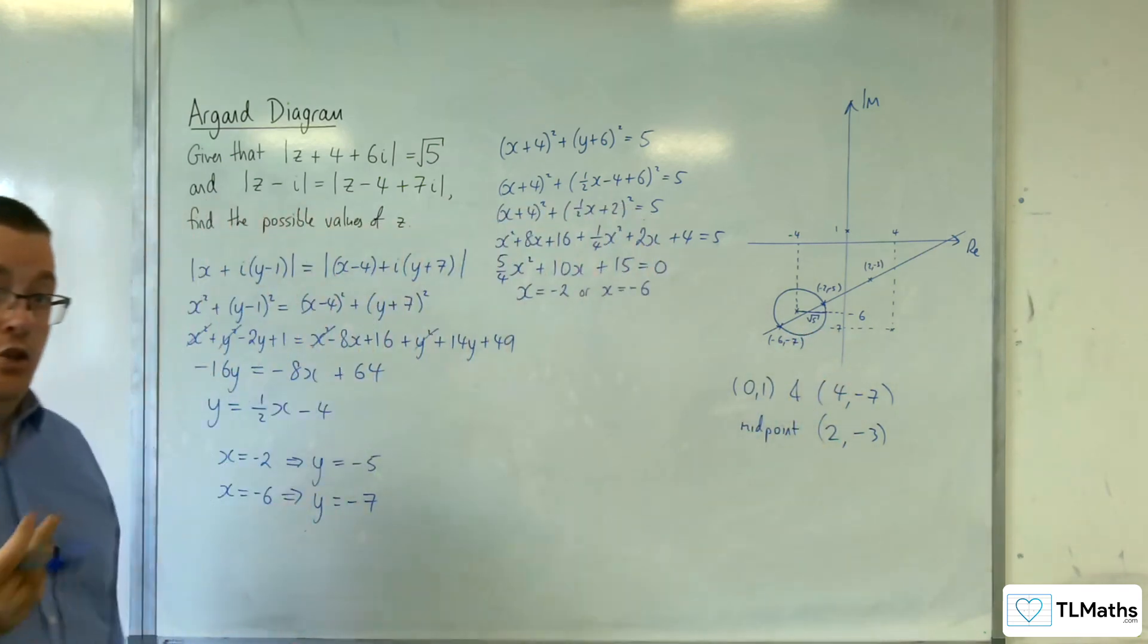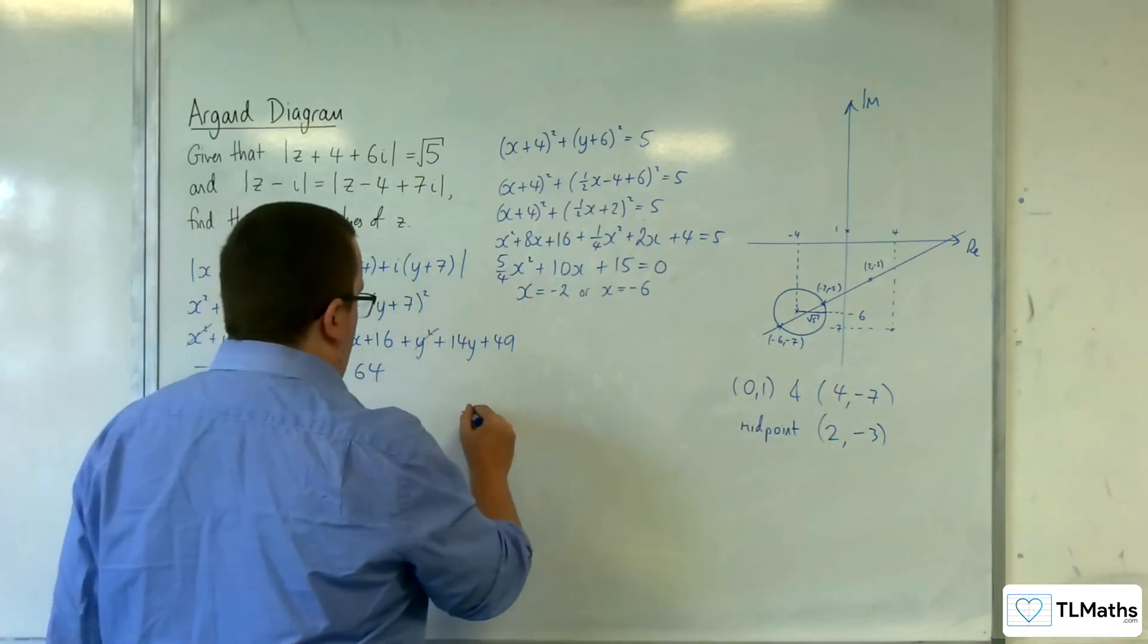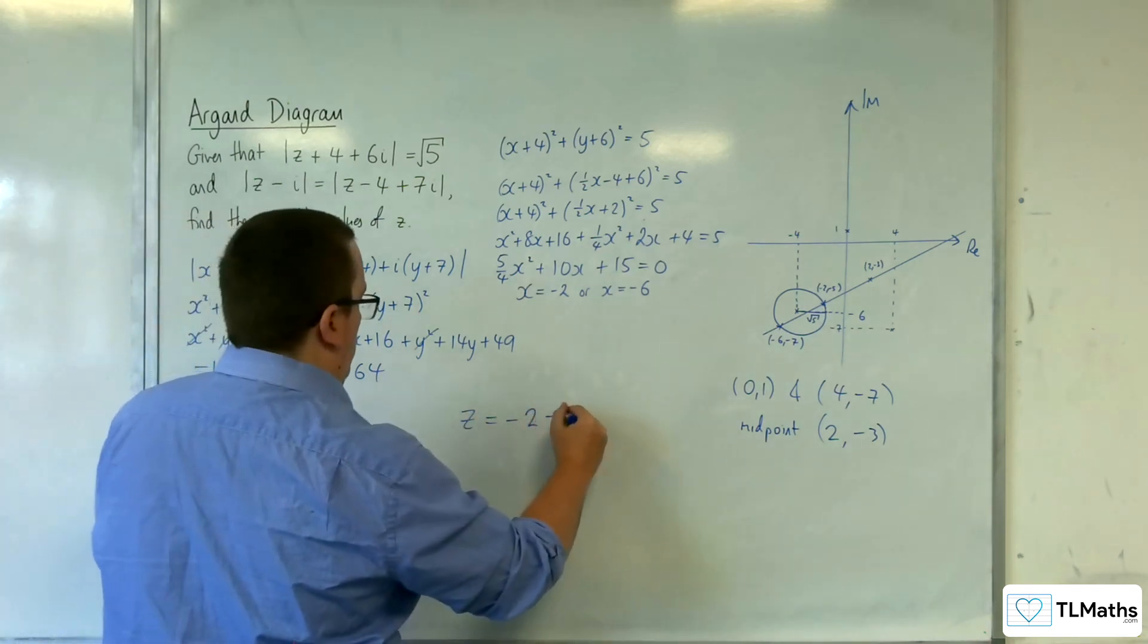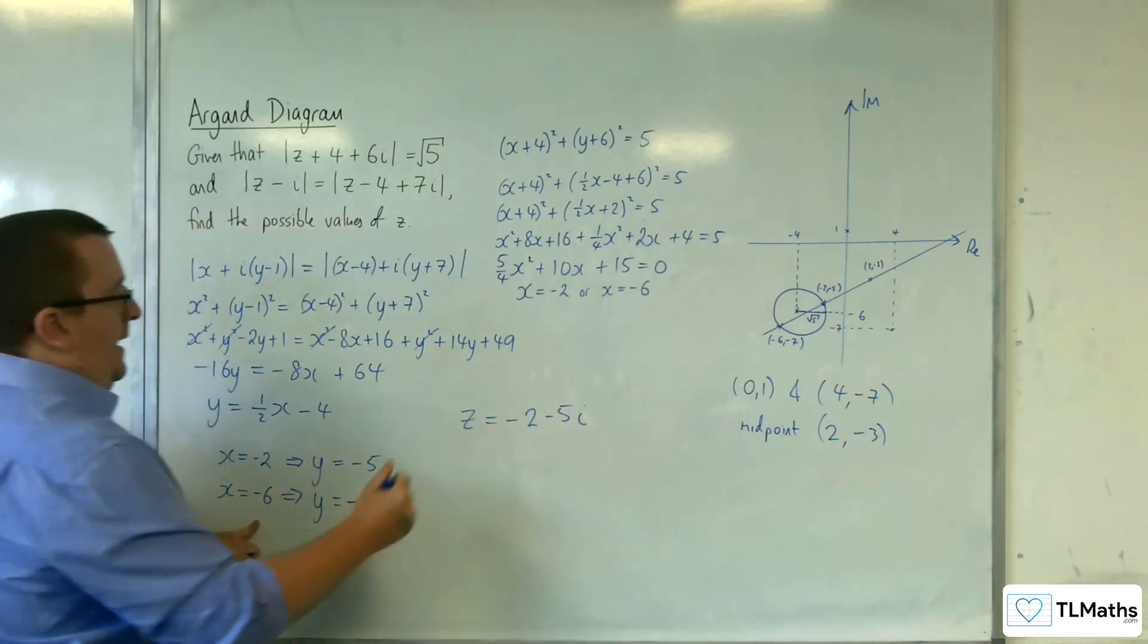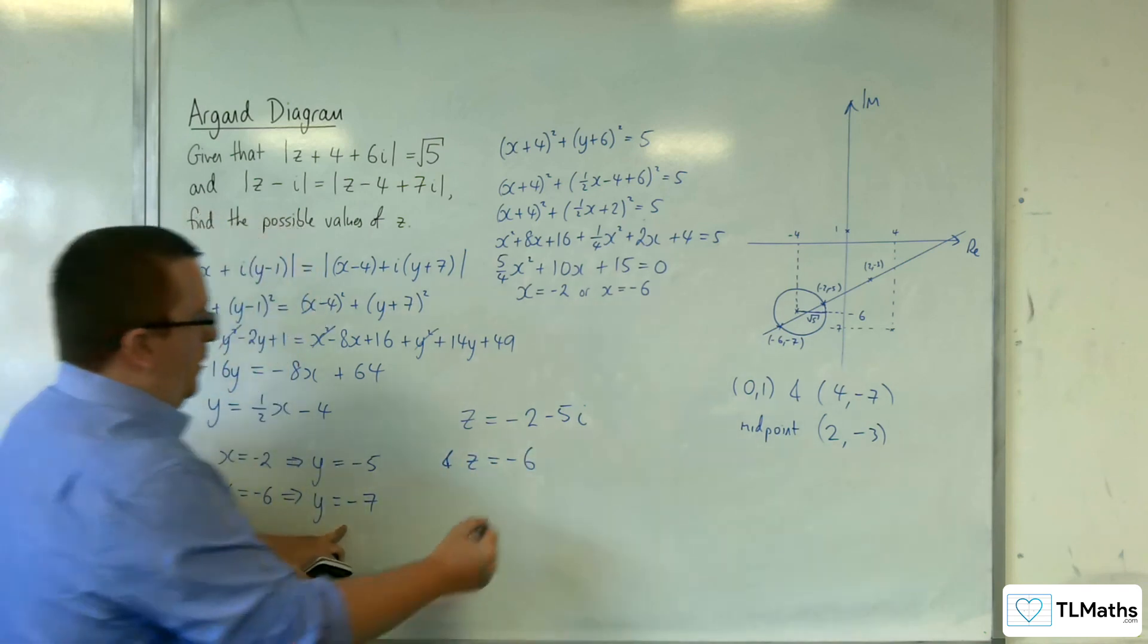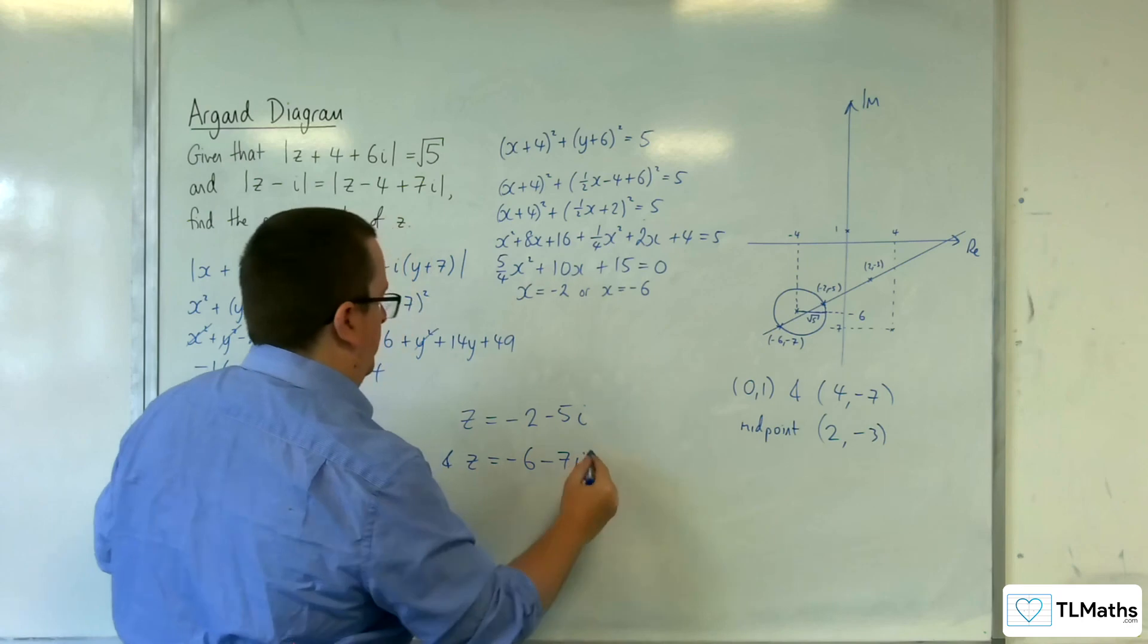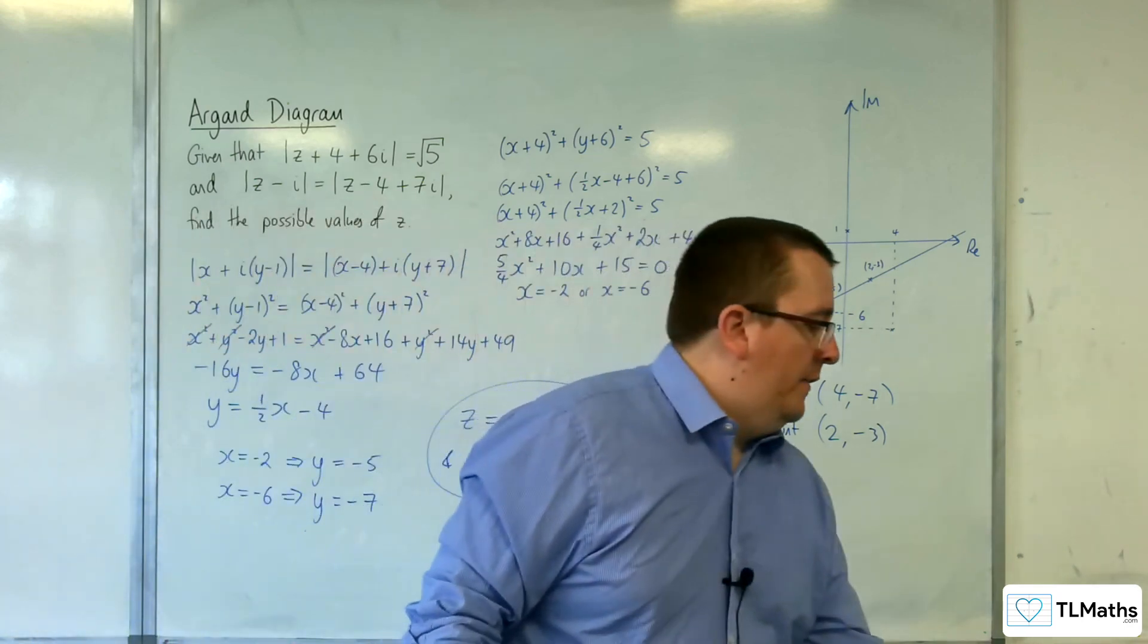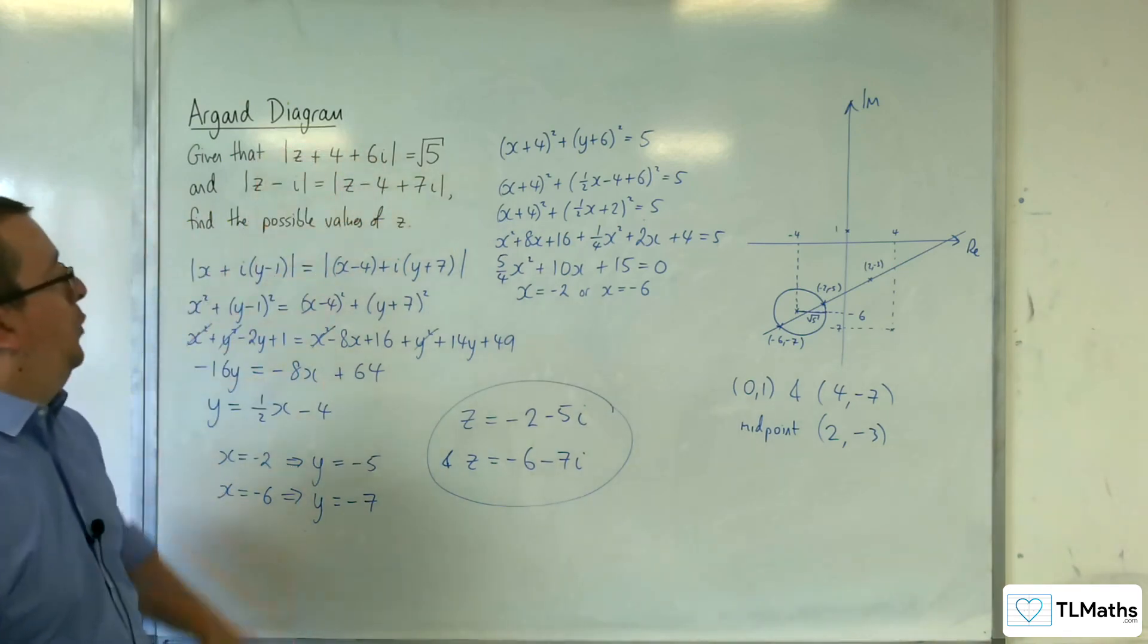So the actual complex numbers that satisfy that are minus 2 take away 5i, and z equals minus 6 take away 7i. They are the two solutions that satisfy those two equations.